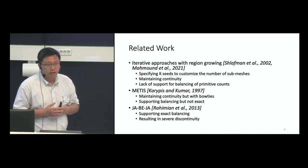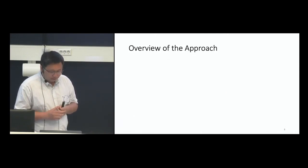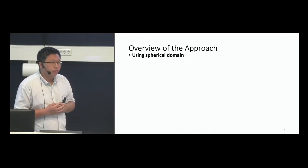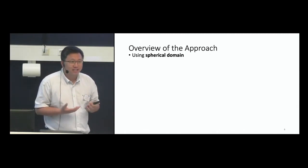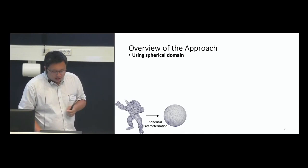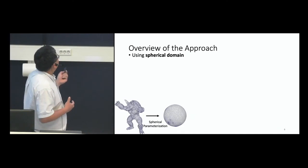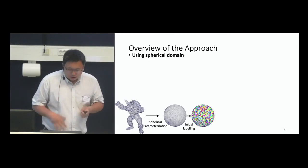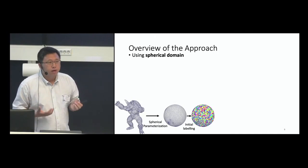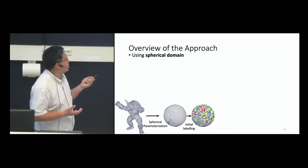This brings us to the overall overview of our approach. We use a different domain — not the 3D domain, but the spherical domain — for performance considerations that allow acceleration of the measurement. First, we perform spherical parameterization, converting the 3D mesh into a spherical representation. Then we randomly initialize labels — the submesh labels — so each triangle gets a random label. It will appear very colorful with random colors.